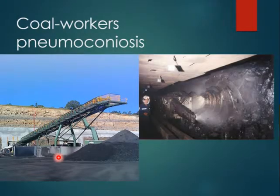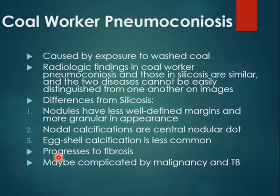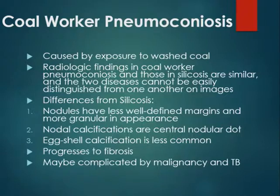Coal worker pneumoconiosis affects people who work with coal in mining. The radiologic findings in coal worker pneumoconiosis and silicosis are similar, and the two diseases cannot easily be distinguished from each other. The most helpful tool is occupational history. Differences from silicosis: the nodules have less well-defined margins, they are granular in appearance rather than solid, nodule calcification are centrinodular dots rather than eggshell, and it progresses to interstitial fibrosis rather than PMF.